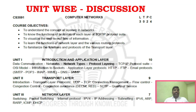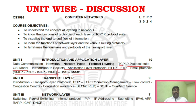Coming to unit-wise discussion, at the Unit 1 level, almost all Part B and even Part C level questions can come from core topics. The key topics you will not be able to avoid are the OSI model, TCP/IP protocols, application layer protocols including HTTP and FTP, email protocols, DNS, and SNMP. DNS and SNMP are very important at the Unit 1 level.